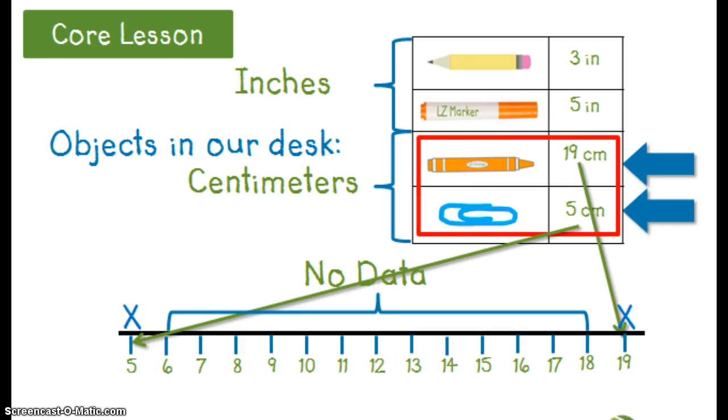Now, using the data from this table, we can create a line plot to show the measurements. Remember that we are only plotting the centimeters from this table. We must show different units of measurement on different line plots. So we create a number line. Starting with the lowest data point 5, we will label our horizontal axis with that number.